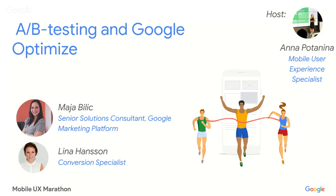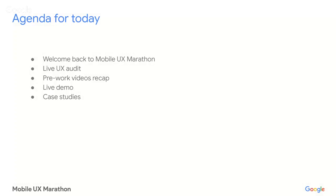Today we also have with us Lena Hansen, joining from Stockholm. We're going to cover A-B testing and Google Optimize. The agenda includes a quick walk-through of the Mobile UX Marathon, some program rules, and feedback from last time. As promised, we will do a live UX audit. Maya will do a recap of the pre-work videos devoted to A-B testing and Google Optimize, and then we'll do a live demo of the Google Optimize tool and discuss different case studies.